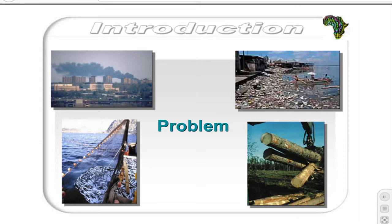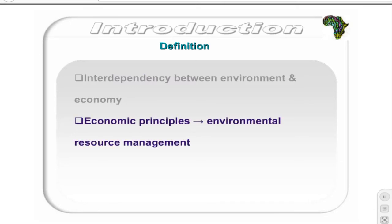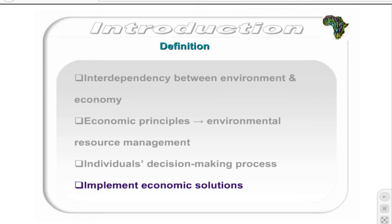The field of environmental and resource economics endeavours to assist decision makers in the process of making appropriate trade-offs between the environment, the economy, and to a lesser degree society. ERE assumes that there are interactions between the environment and the economy that are interdependent. ERE can thus be defined as the application of economic principles to the management of environmental resources. It sets out to understand how and why individuals make decisions that have consequences for the natural environment and implement economic solutions to environmental problems.